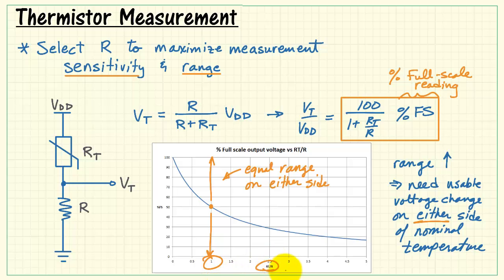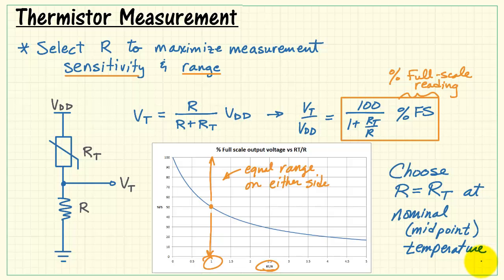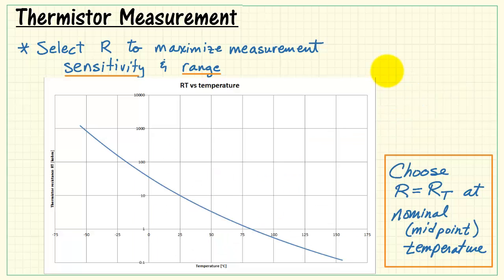And for many applications, choosing the resistance R to match the value of the thermistor resistance at the nominal or midpoint temperature is a good strategy. It's not the only way to do things, but it's often the case that this works for your application.